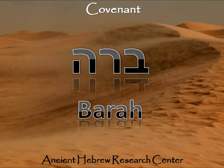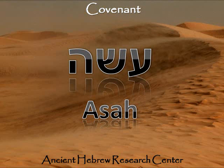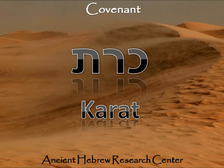So when it says 'make a covenant' — now we've got to look at the word 'make.' The Hebrew word for make is asa, but that's not the word used when it says 'make a covenant.' The word is karat. Anyone know what karat means? It means cut, to cut. So when it says 'make a covenant,' literally in the Hebrew it says 'let's cut the meat.' That's what it says — cut the meat.